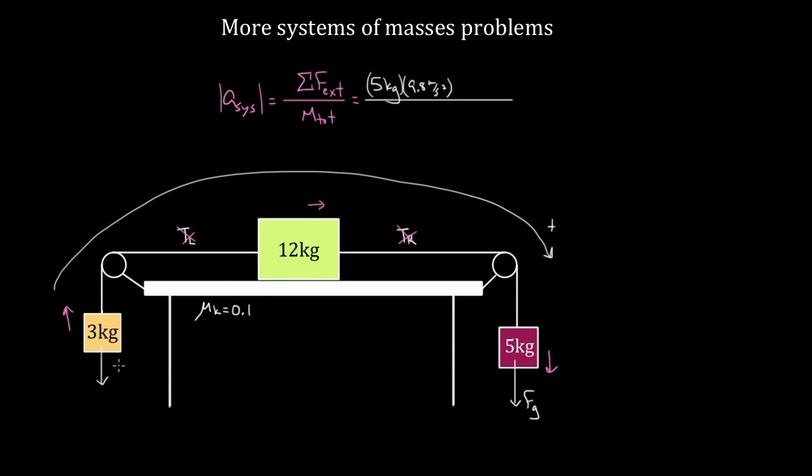This force of gravity on the three kilogram mass is trying to prevent the acceleration, because it's pointing opposite the direction of motion. The motion of the system is up, right, and down across this direction, but this force is pointing opposite that direction, this force of gravity right here. So I'm gonna have to subtract three kilograms times 9.8 meters per second squared.